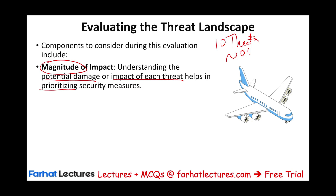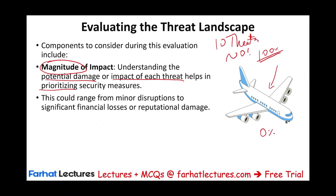An extreme example to explain magnitude of impact: if you travel by plane, the probability of a crash is very low — actually lower than driving a car to the airport. However, the magnitude of impact is totally different. If a plane crashes, there is close to a 100% chance no one survives, whereas in a car crash people often survive due to seat belts and airbags. So for a company, threat impact can range from minor disruption to significant financial losses or reputational damage — not all threats are equal.